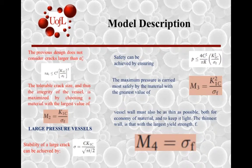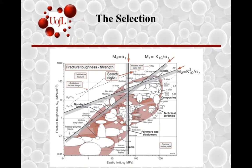If we apply our pressure equation and solve for pressure, then apply our material index, we come up with a third material index that takes into account fracture toughness squared divided by the yield strength. We also want to save money — we don't want to make something super thick — so a fourth material index would be just the yield strength. We can then play with the three of them to see which materials give us a strong enough crack design and the right thinness for the pressure vessel.